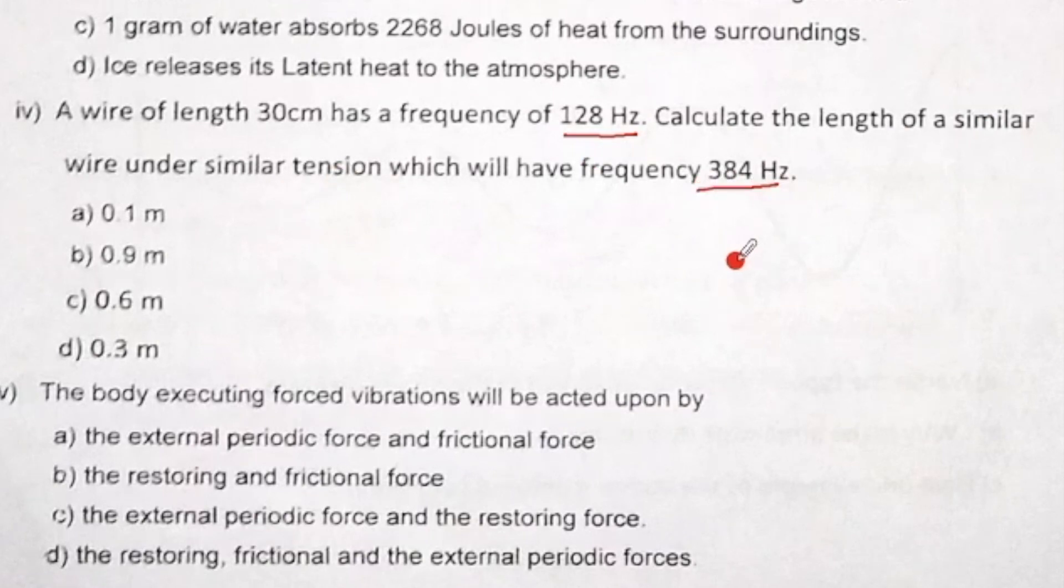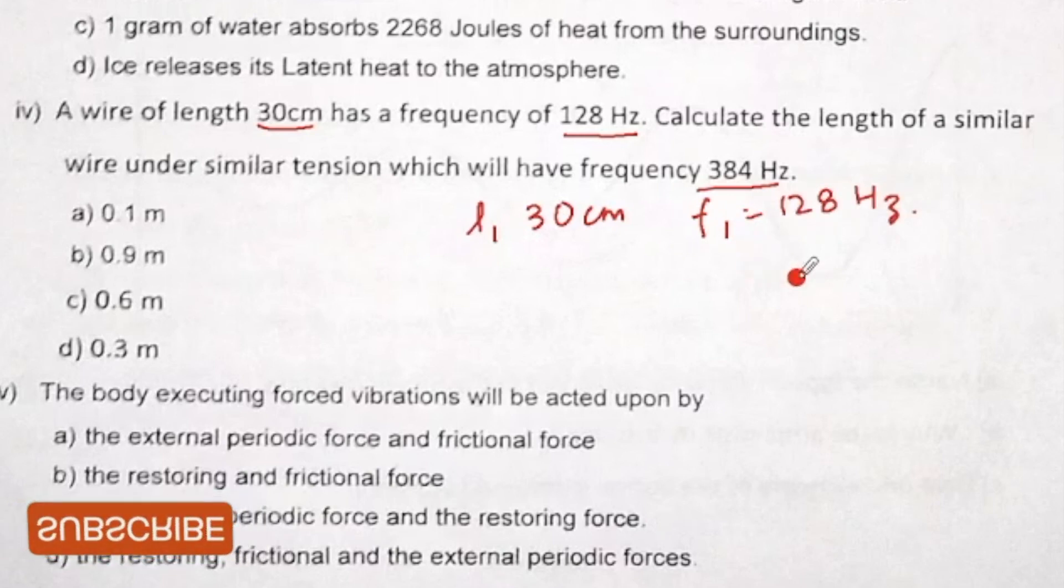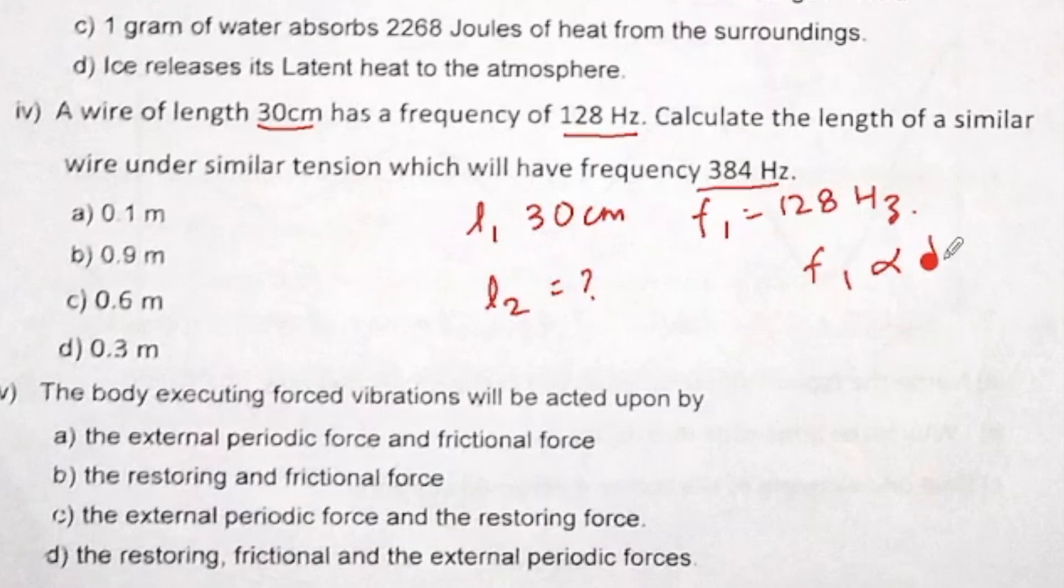So how will we do this? Your l1 is 30 centimeters, your f1 is 128. So if it is 384, then how much? You'll have f1 inversely proportional to length, so f1 upon f2 will equal l2 upon l1. That will give us 128 upon 384 equals l2, which we do not know, and l1 is 30.